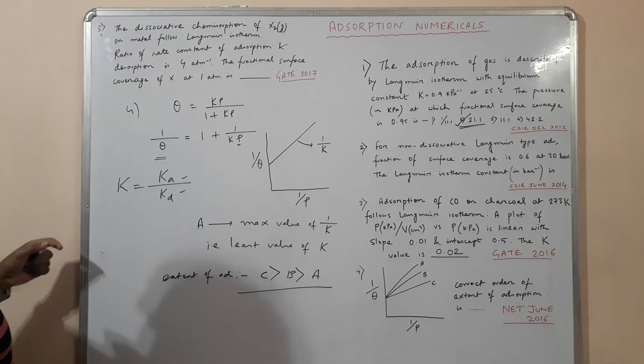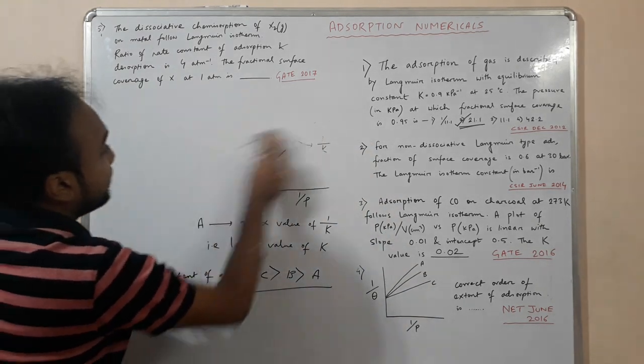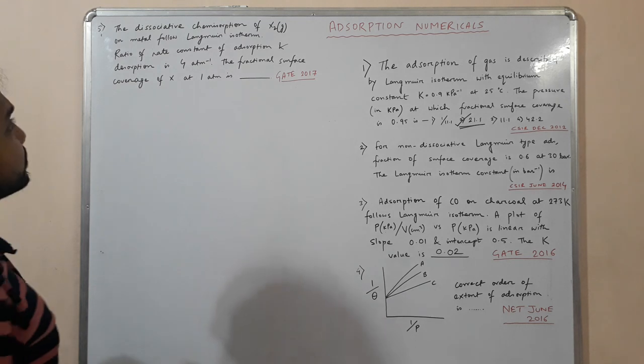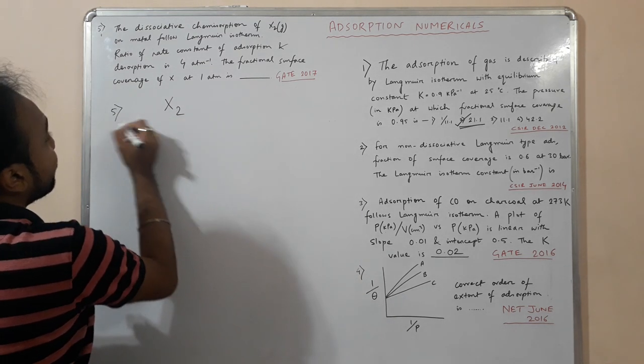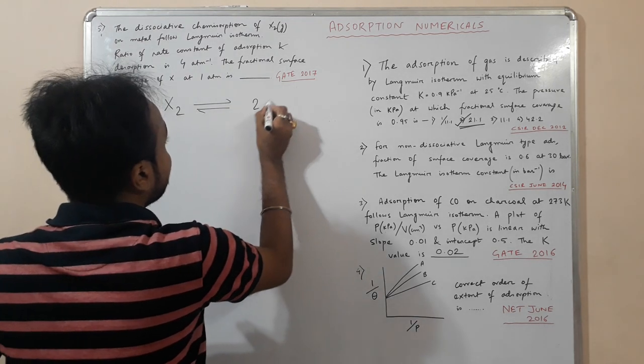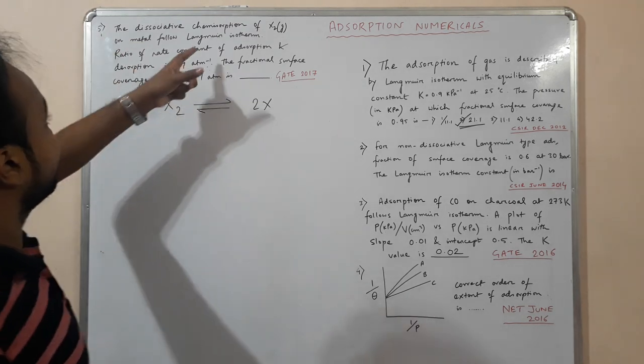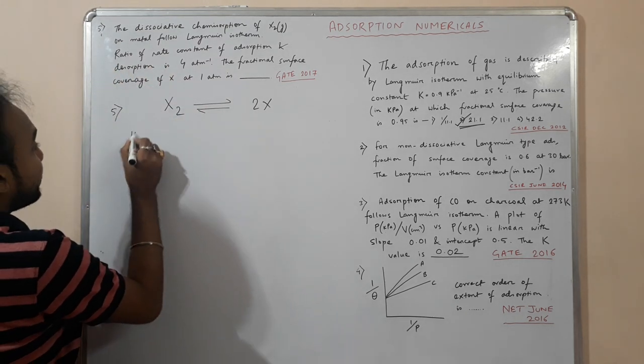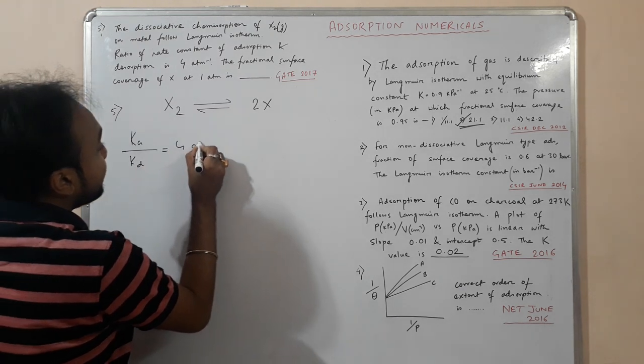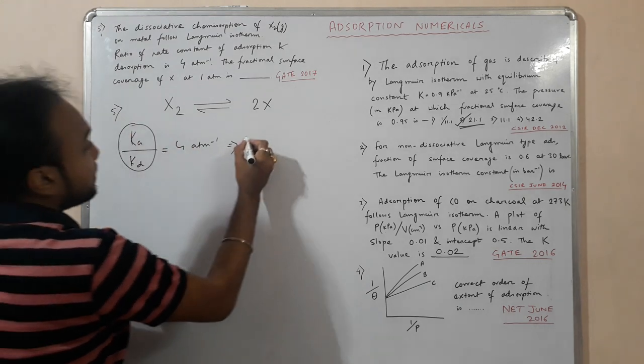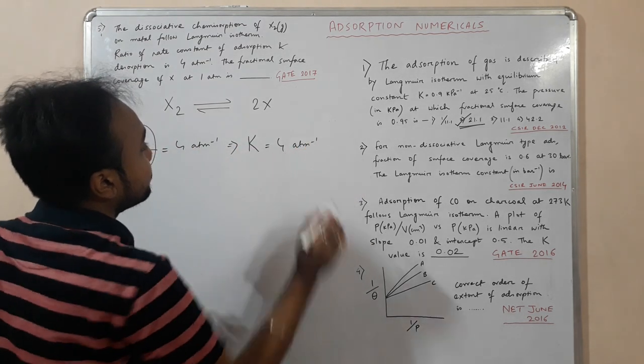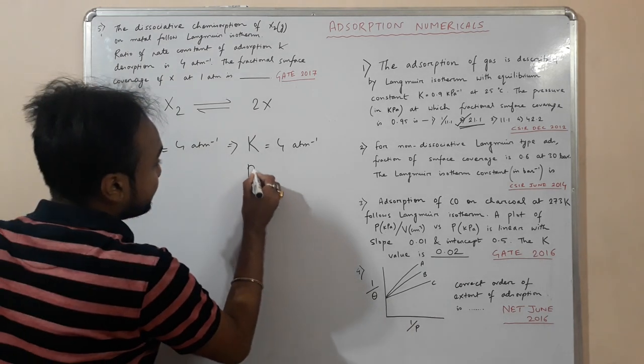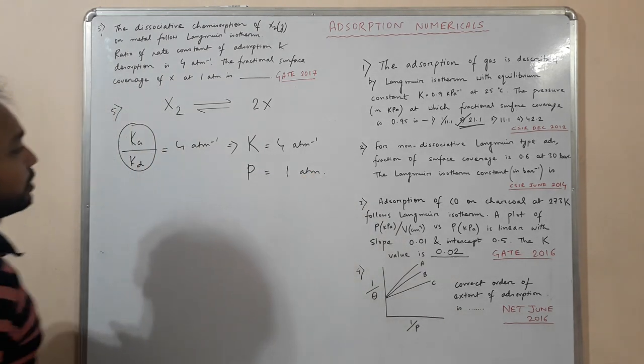The last numerical came in GATE 2017. Question number 5: dissociative chemisorption of X2. X2 undergoes dissociative type, that means forms 2X. This follows on the metal surface the Langmuir isotherm. The ratio of rate constant of adsorption and desorption is 4 atmosphere inverse. So ratio of rate constant of adsorption by desorption is 4 atm inverse. This is the K, 4 atm inverse. The fractional surface coverage of X at 1 atm is what? We have given the pressure as 1 atm.